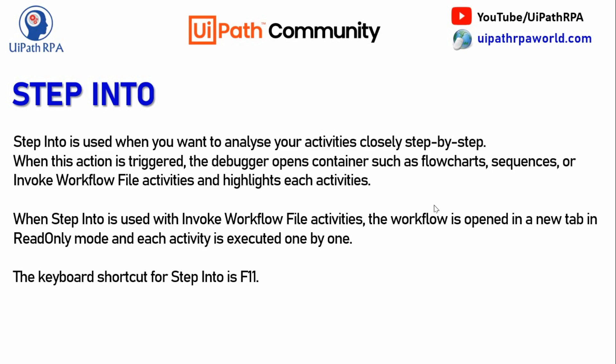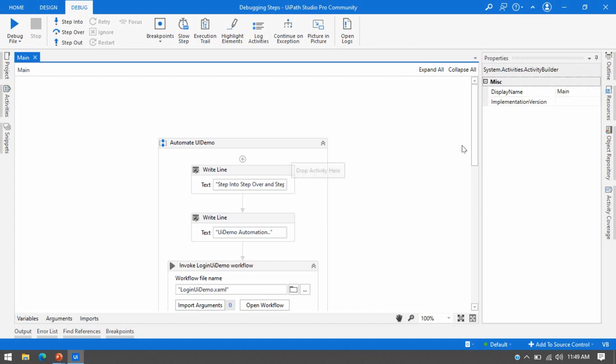When Step Into is used with the Invoke Workflow File activity, the workflow is opened in a new tab in read-only mode. So whenever you use Step Into and it is going to debug an Invoke Workflow File activity, it will highlight that and open that workflow in a different tab — locked for editing — and then each activity inside that workflow will be executed one by one. The shortcut key for Step Into is F11.